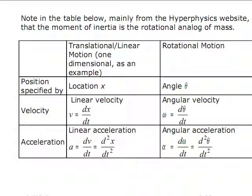You can find a table like this in the HyperPhysics website, which is a very good website. Most of this table is borrowed from them, but I added things a little bit differently. So this column is the translational or linear motion, and we're just using one dimension to show how this works, and this column is for rotational motion.